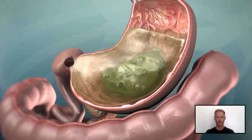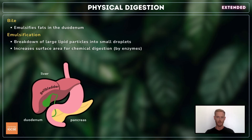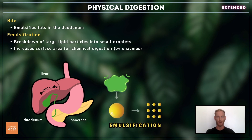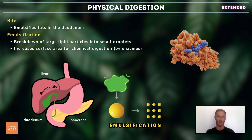For extended, you also need to outline the role of bile in physical digestion. Bile is a green watery fluid that's produced by the liver, stored in the gallbladder, and released into the duodenum through the bile duct. It contains bile salts that emulsify, or break down, large lipid particles into small droplets with a large surface area. These droplets are then chemically digested by the action of the enzyme lipase.